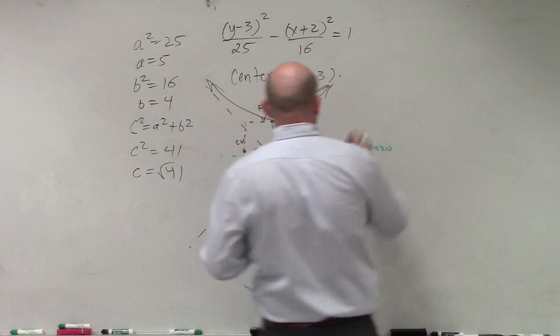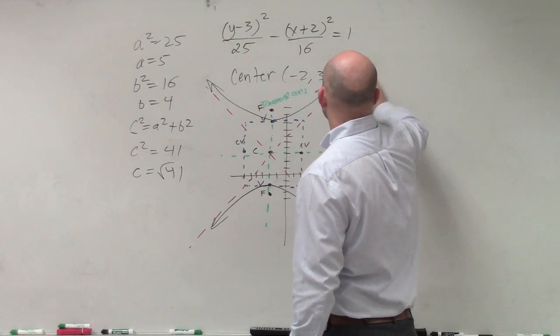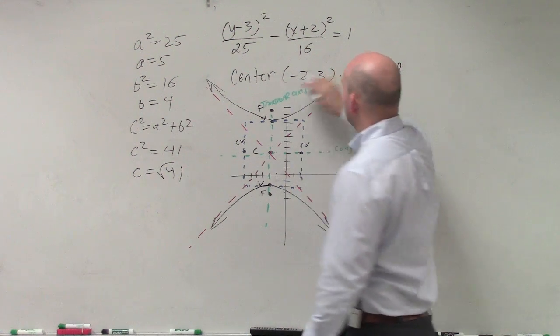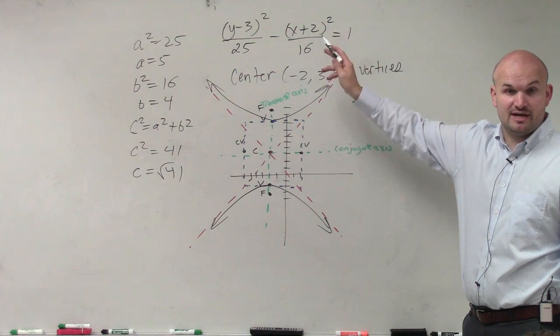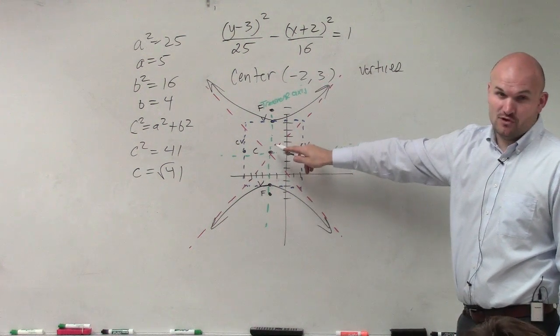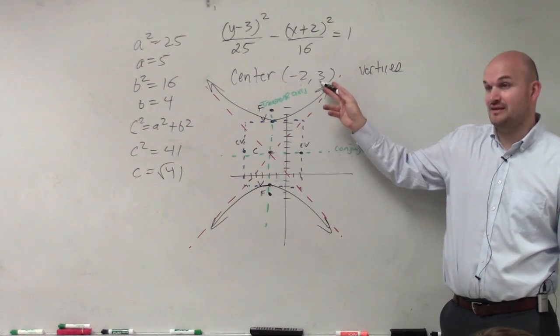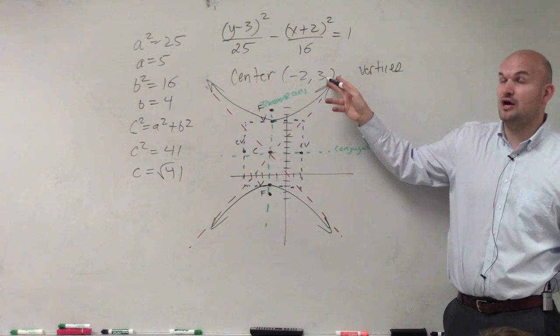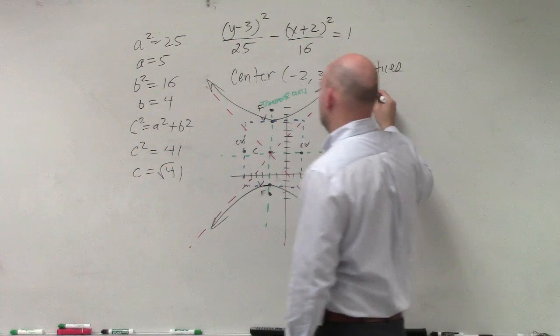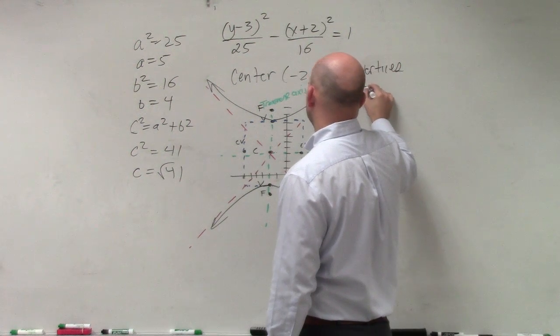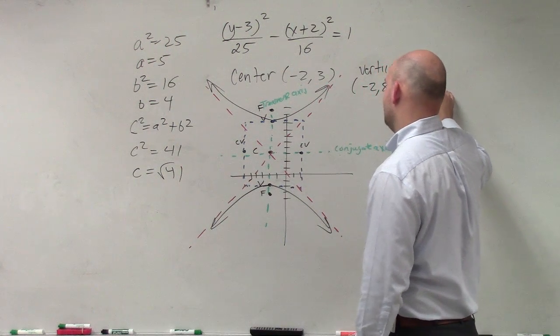Now let's label everything. From my center (-2, 3), my vertices are going up or down. I'm going up and down from 3, so going up 5 from 3 and down 5. So my vertices are (-2, 8) and (-2, -2).